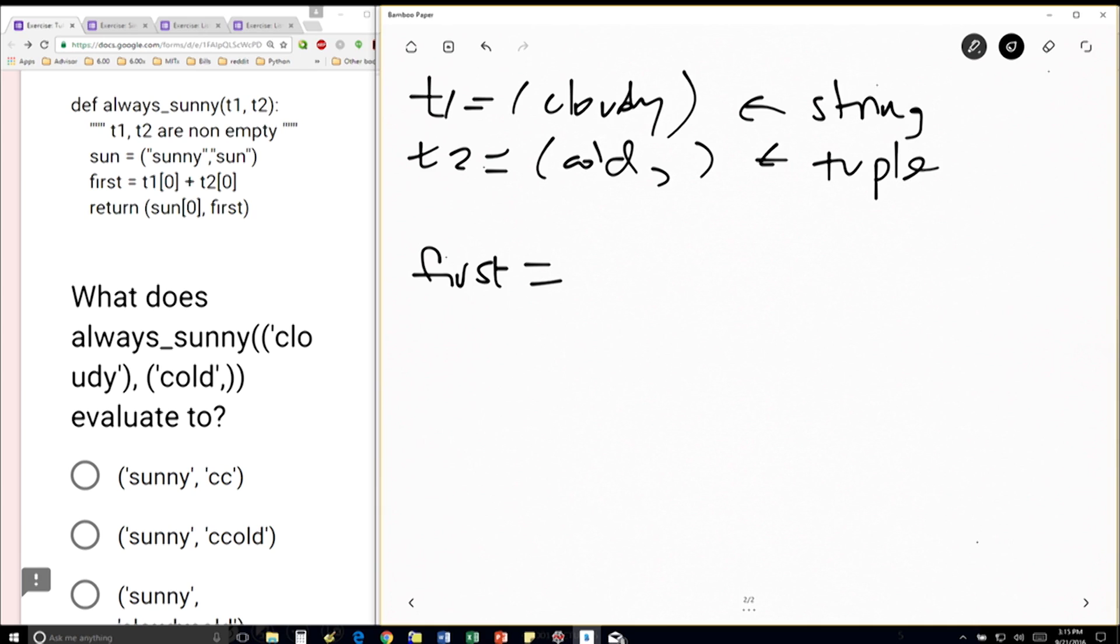Right? The fact that I have parentheses doesn't actually make a difference when I'm talking about strings like that. So when I'm indexing into a string, t1 at position 0 actually just gives me a c, because it's a string, not a tuple.